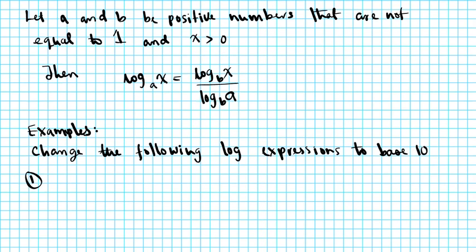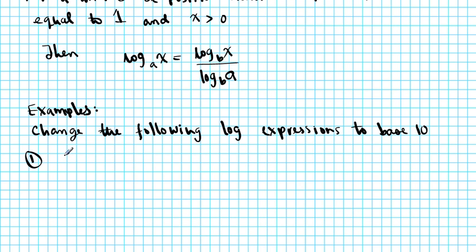So number one, let's say we have log base 3 of 7. So how does that happen? We're going to have a ratio of the target base. The target base is base 10. So put a 10, log base 10, and log base 10. That's what we want our target base to be. The bigger number goes on top.